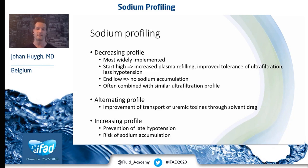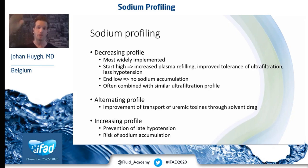This decreasing profile is often combined with a similar ultrafiltration profile, where there's a high ultrafiltration rate at the start of dialysis where it's best tolerated, and a low rate at the end. We also have the alternating profile, developed in the late 1960s to prevent disequilibrium syndrome, by alternating between high and low sodium throughout the session to improve transport of uremic toxins through solvent drag. Less widely used is the increasing profile, where sodium increases throughout dialysis, preventing late hypotension but also carrying the risk of sodium accumulation.